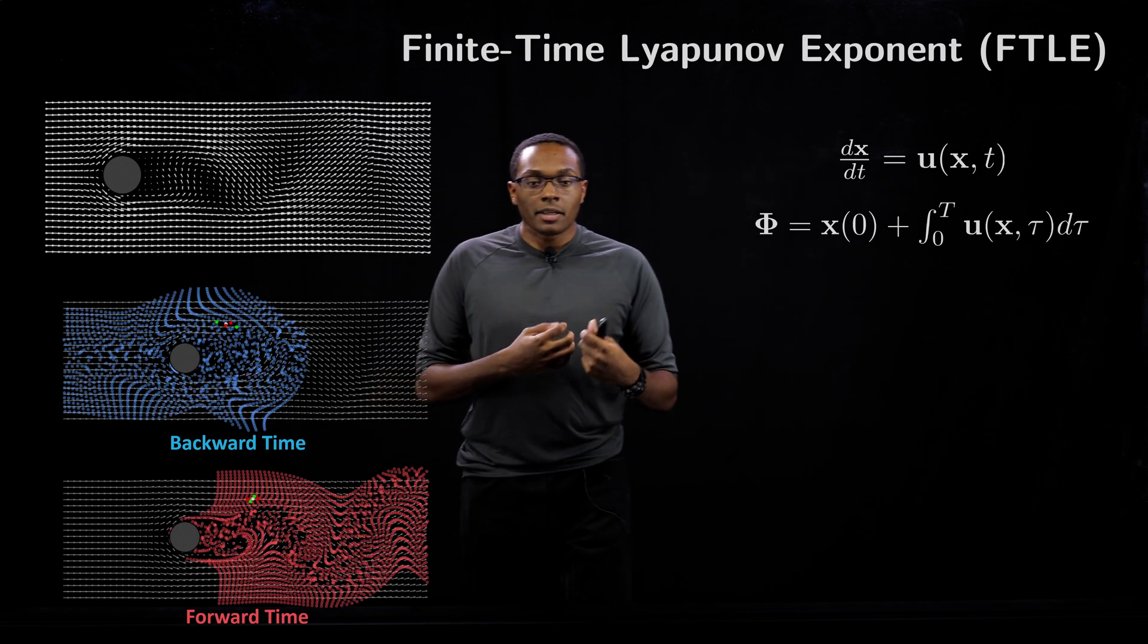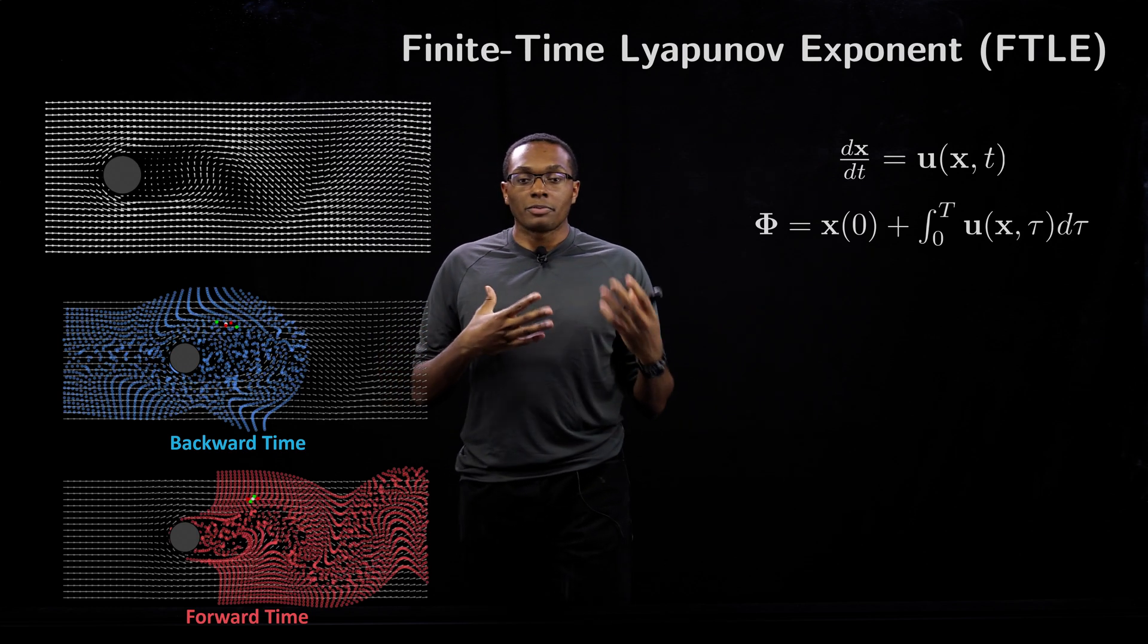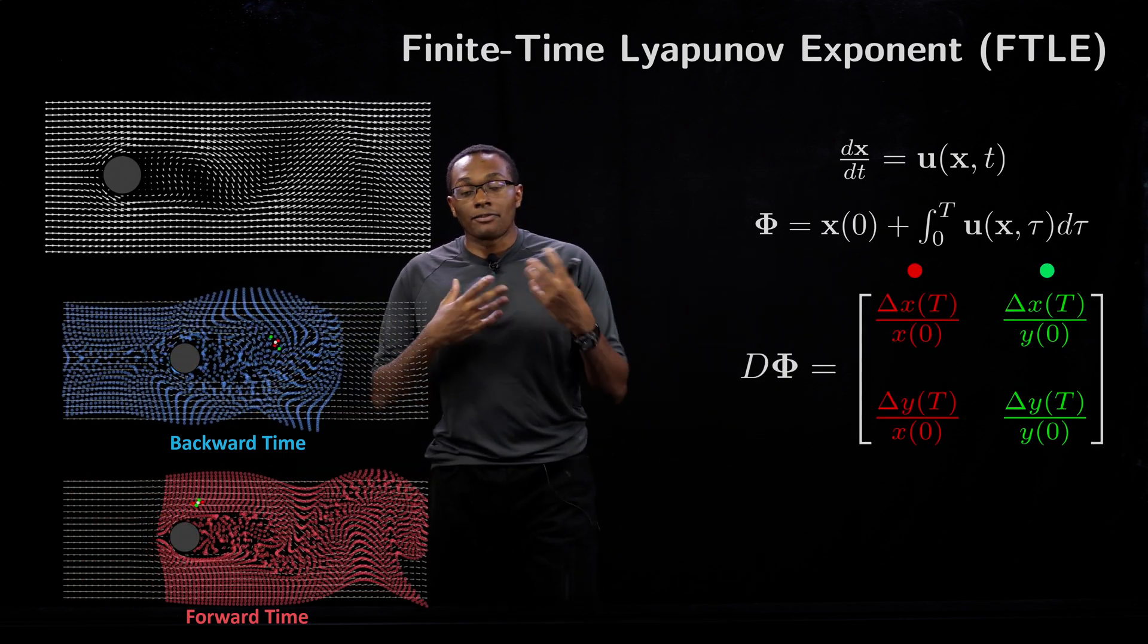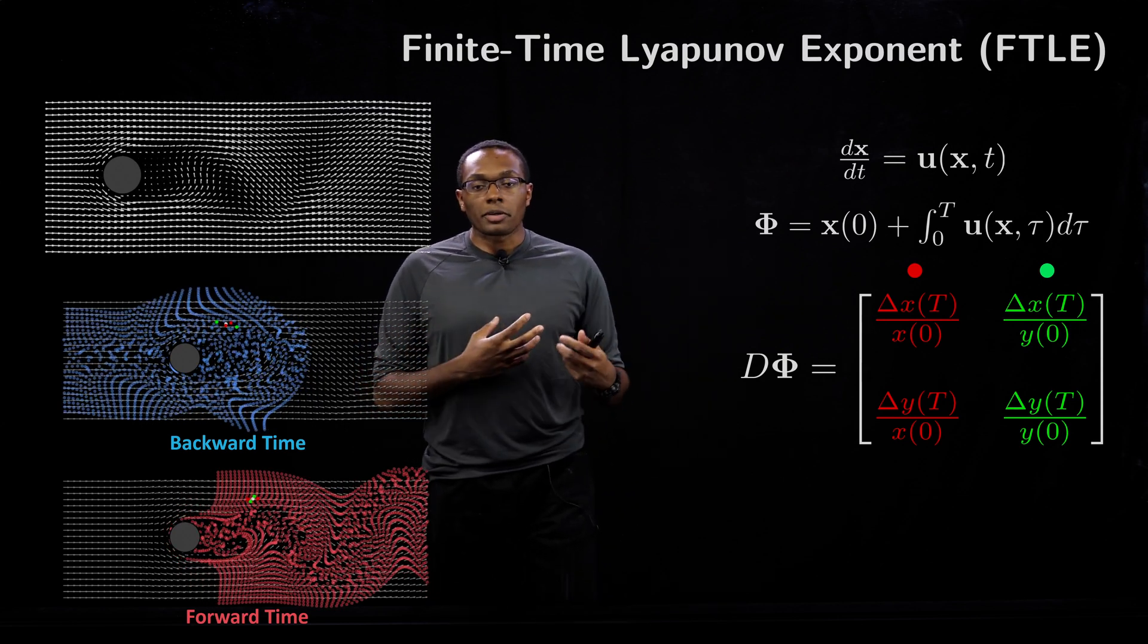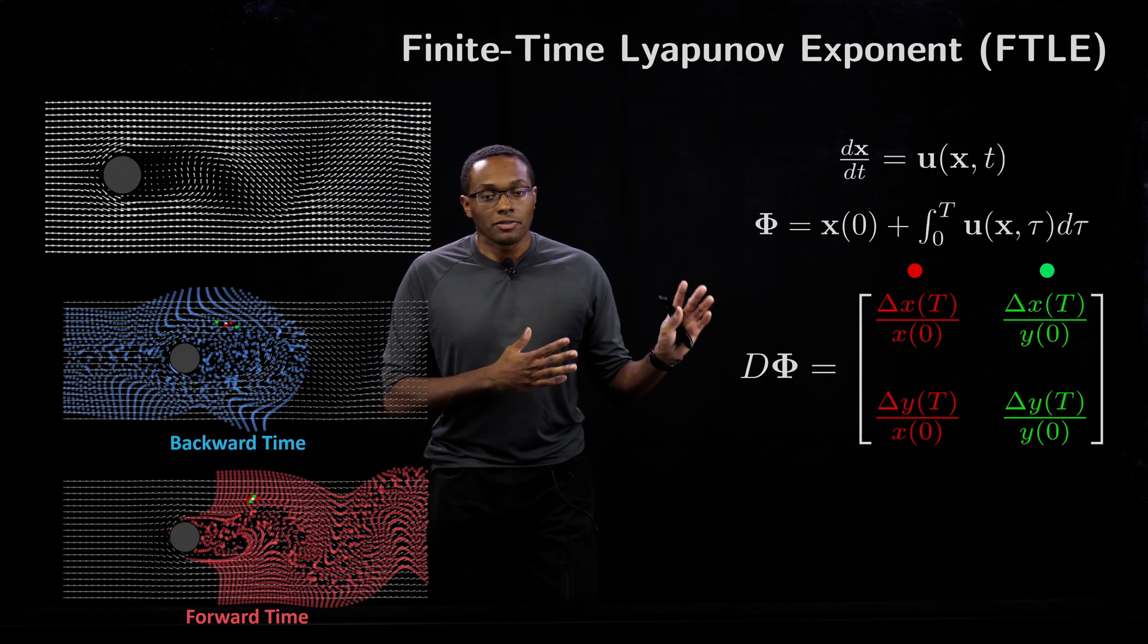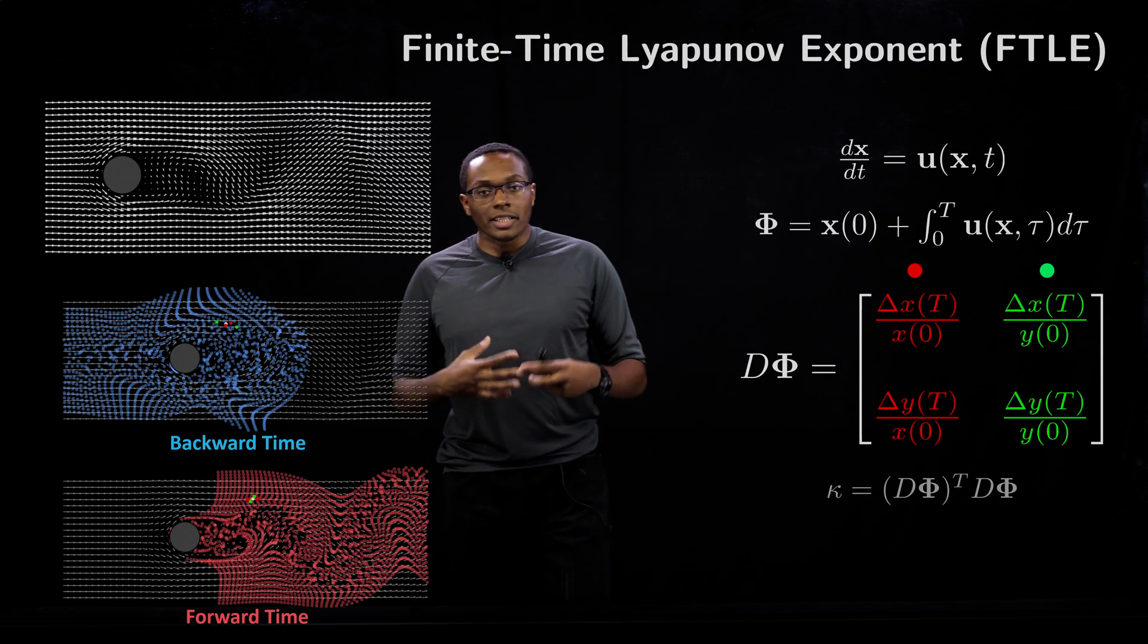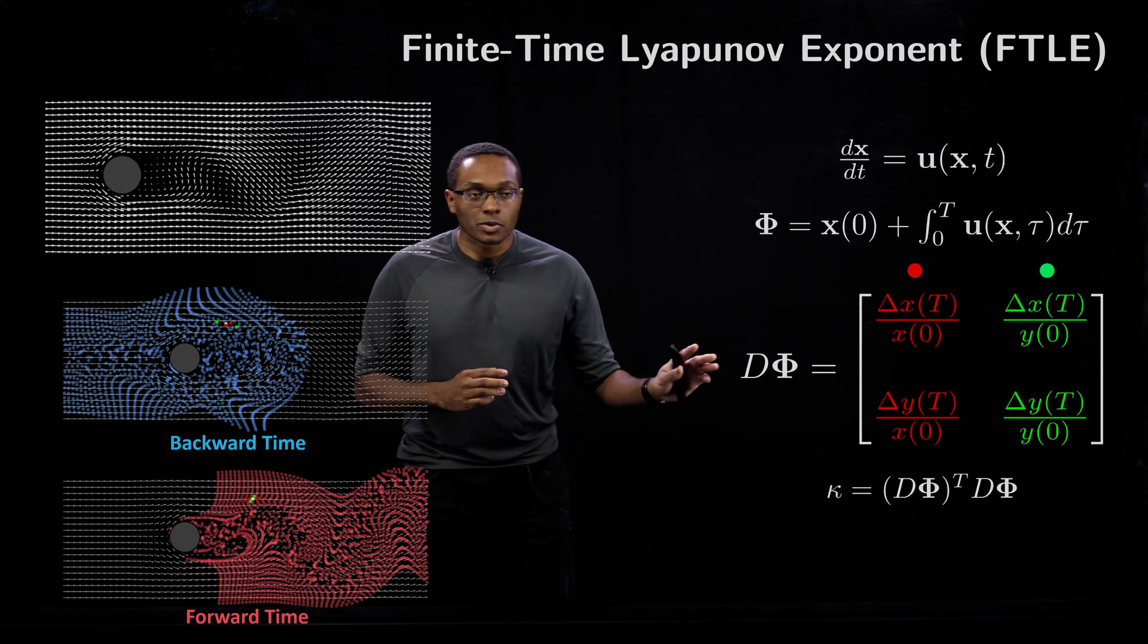In computing the FTLE the main thing that we're interested in is the stretching of neighboring particles with respect to each other. We can compute what we call the flow map gradient, which is a matrix that contains information of the amount of stretching, compression, and rotation of these neighboring fluid particles. We take the transpose of this matrix and multiply it by itself, which gives us the strain tensor.